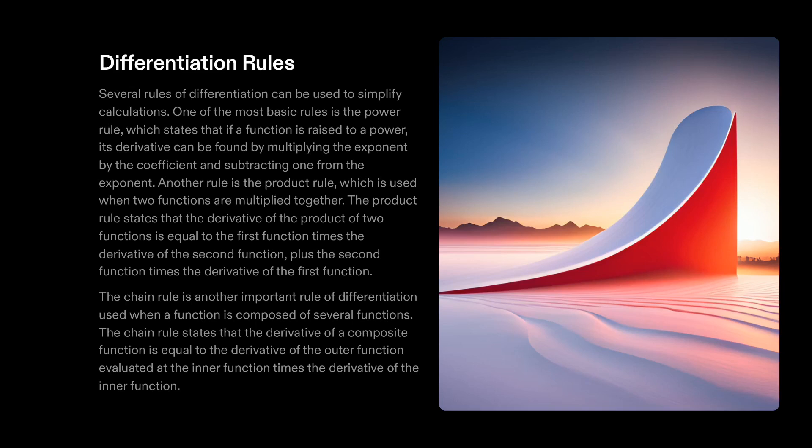The chain rule is used when a function is composed of several functions. The derivative of a composite function is equal to the derivative of the outer function evaluated at the inner function, times the derivative of the inner function.